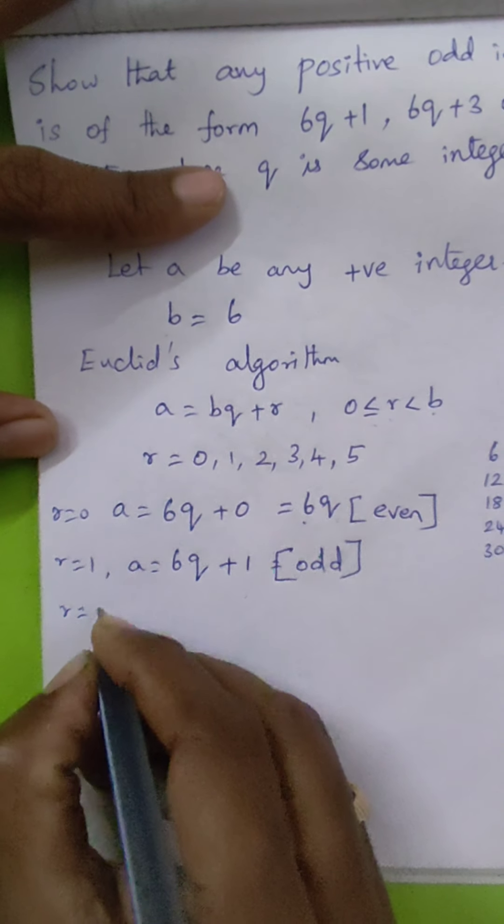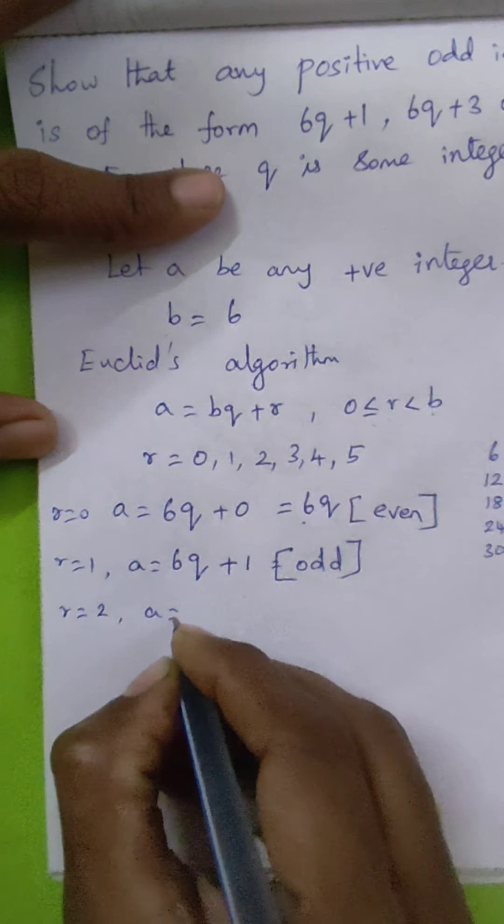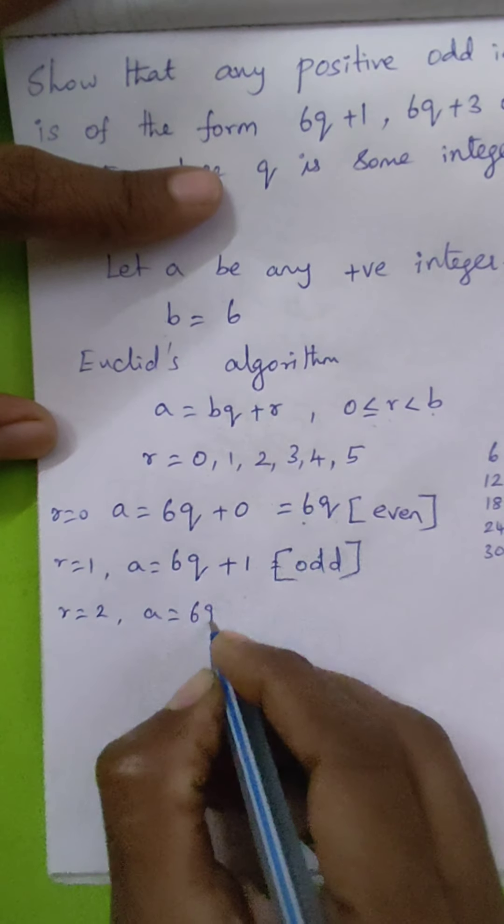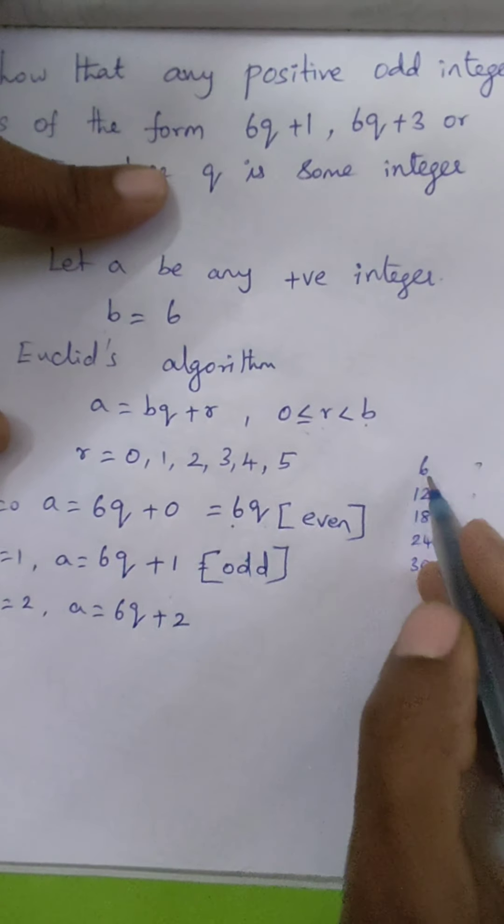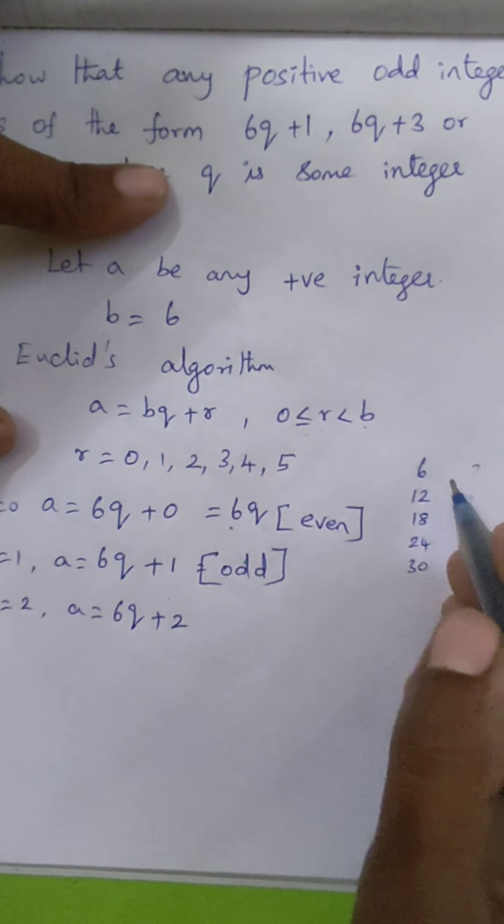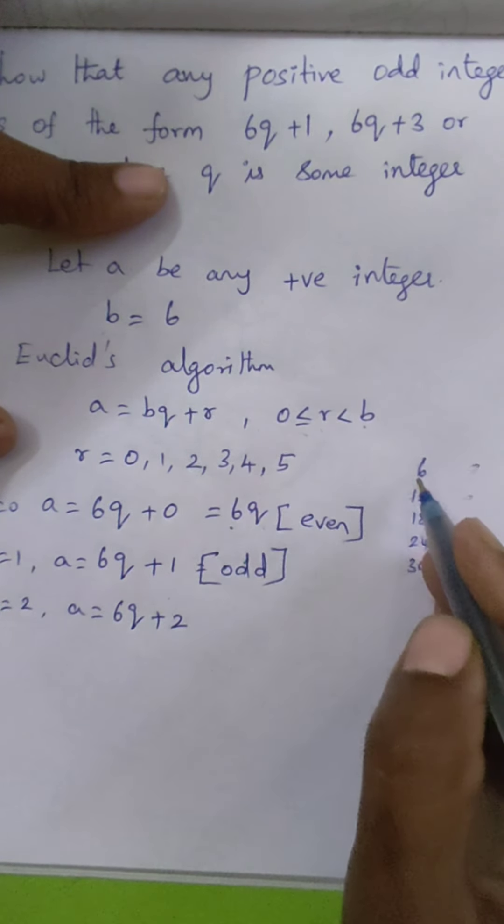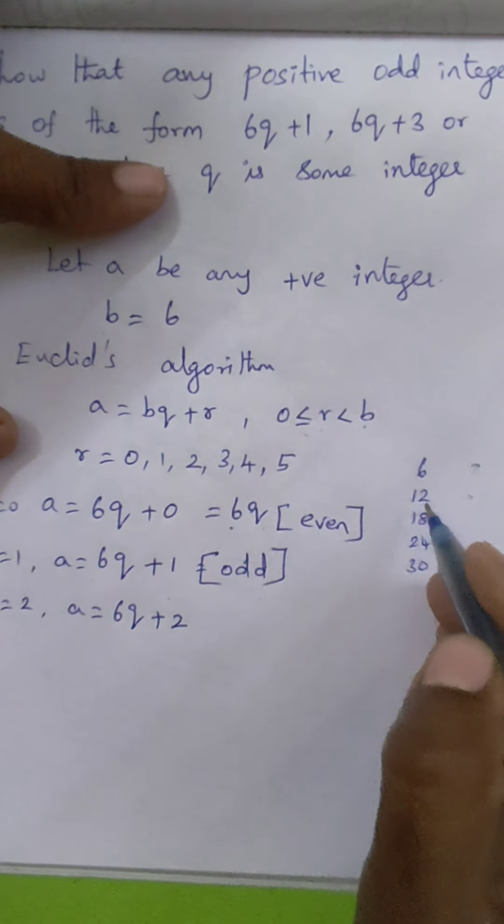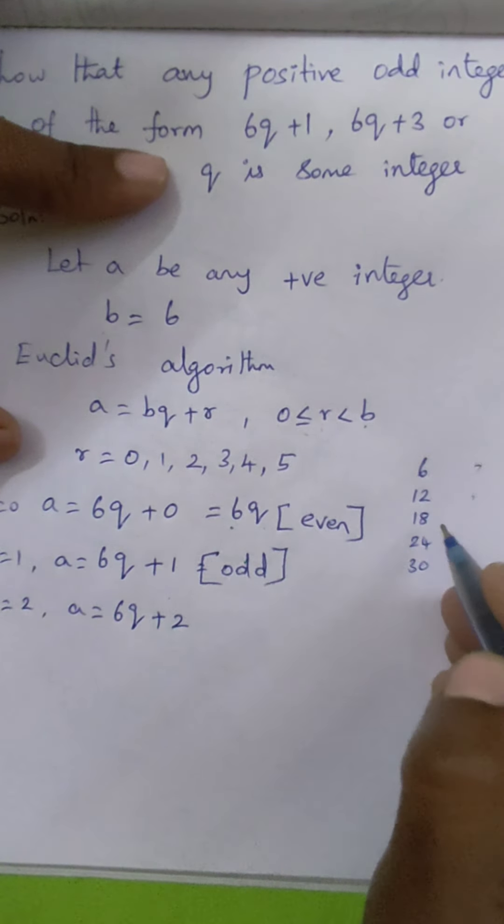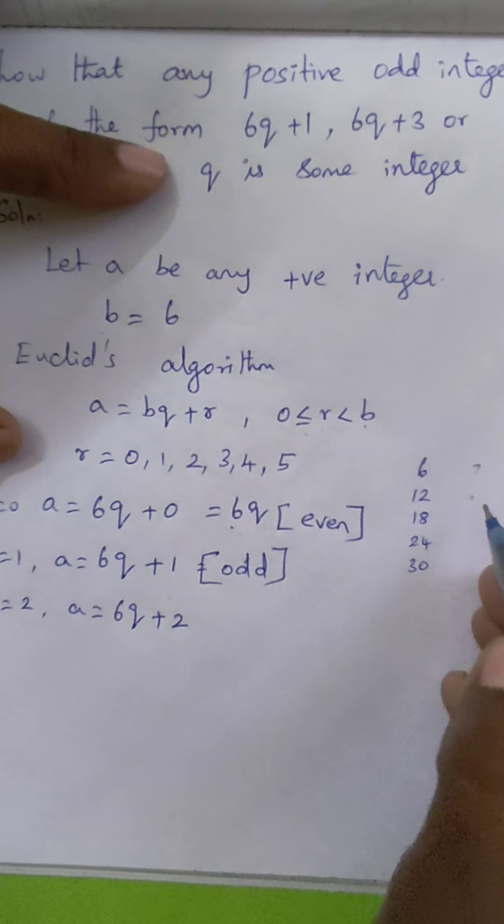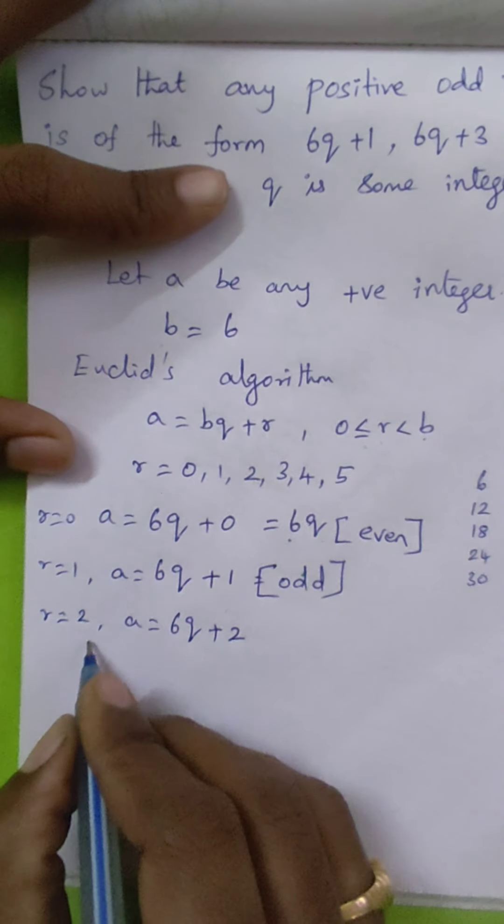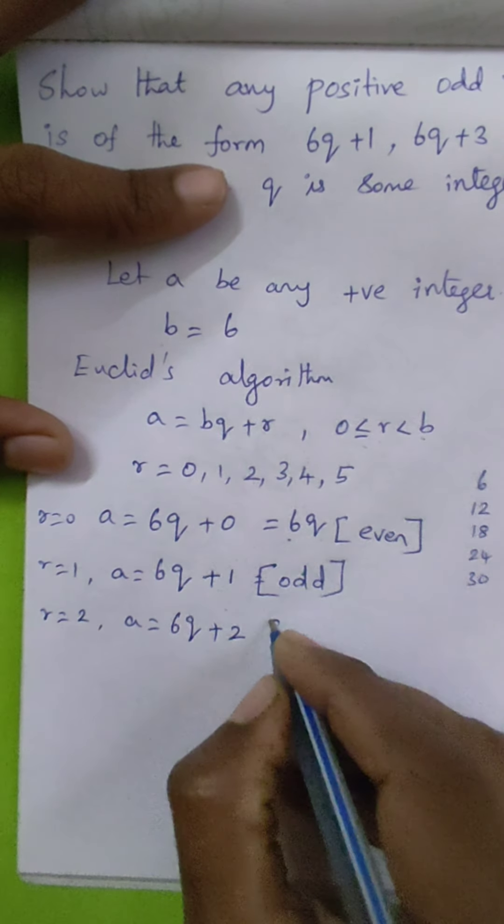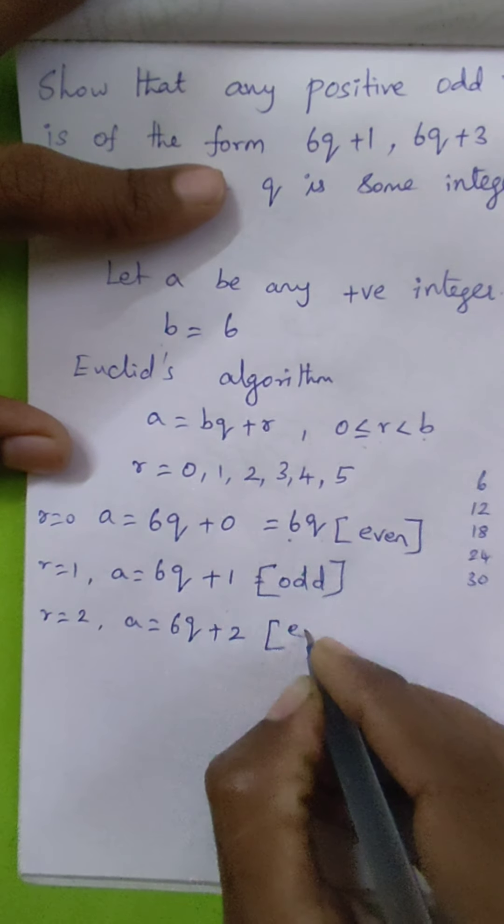When r equals 2, a equals 6q plus 2. Adding 2 to multiples of 6, we get 8, 14, 20. All those values are even. So when r equals 2, a equals 6q plus 2, and this is even.